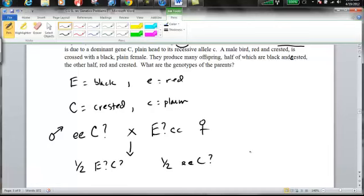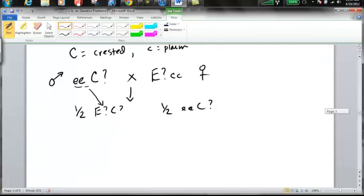Now, here's the thing. These kids with these phenotypes, that's going to be black and crested, cannot be homozygous dominant. The reason is their dad only has the recessive alleles to give. So that means this can't be E question mark. It's got to be capital E, lowercase e. These kids have to be heterozygous.